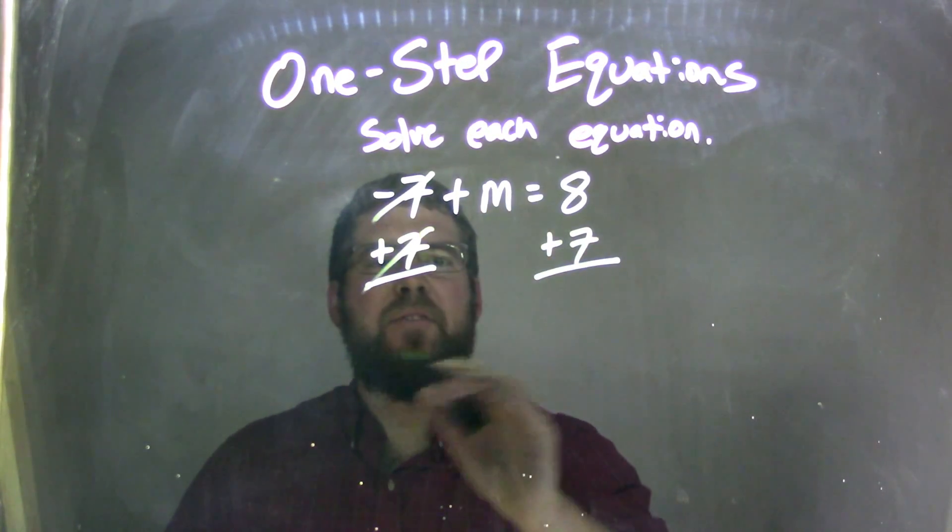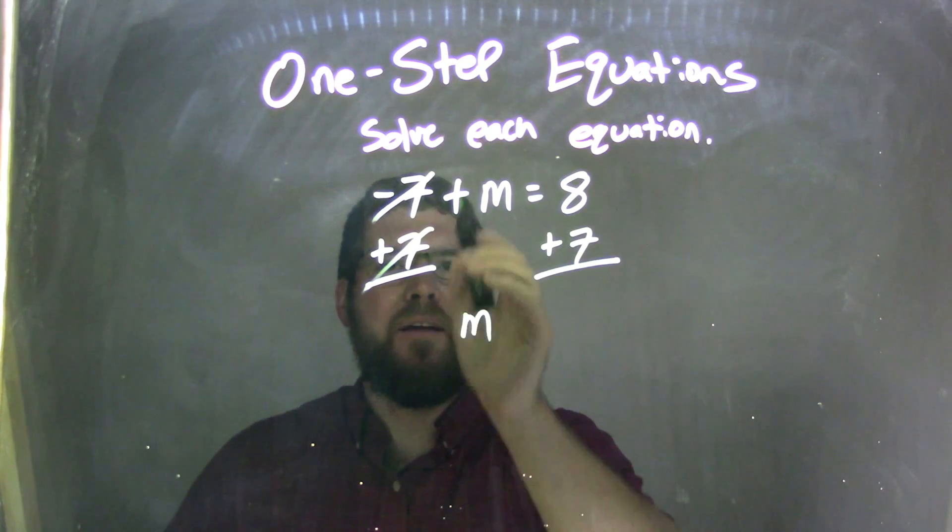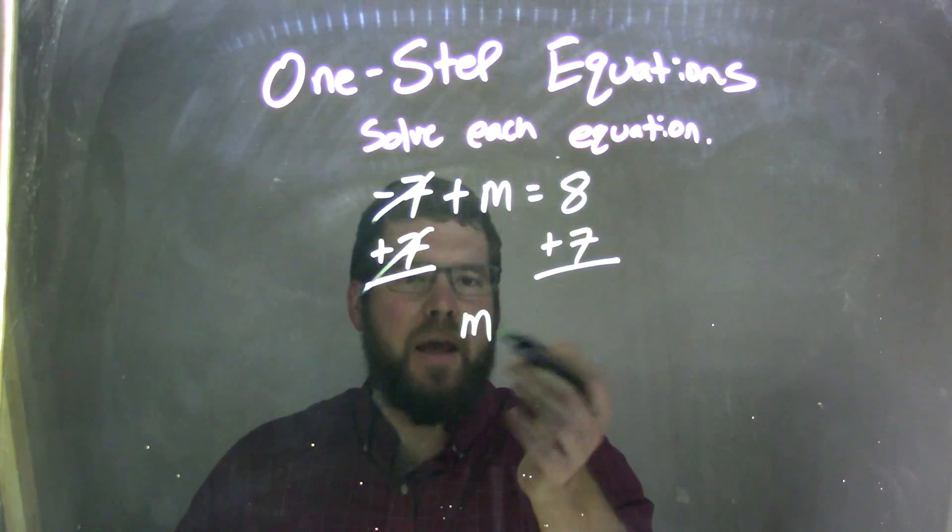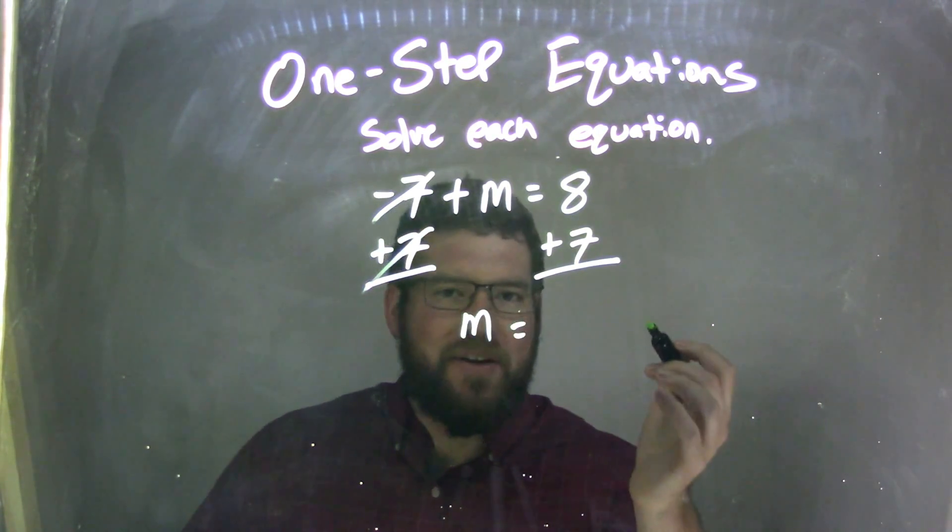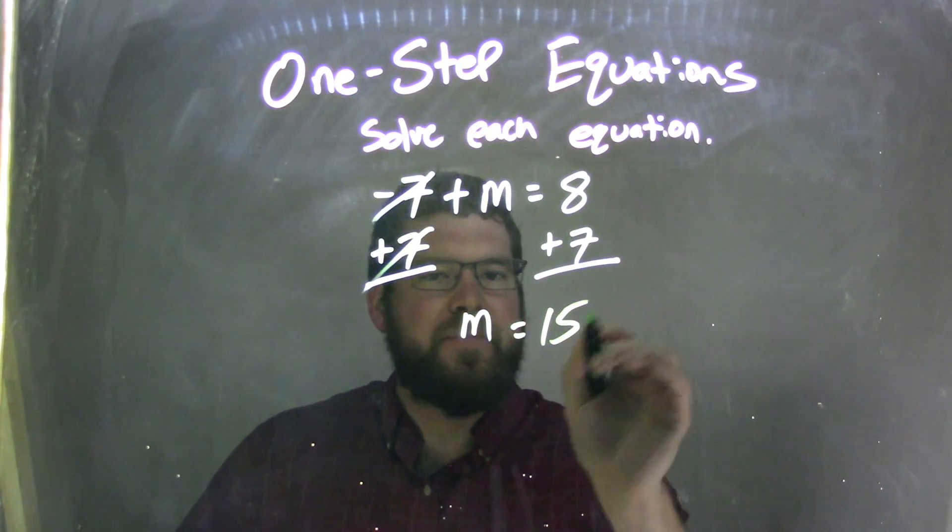Well, adding a 7 here cancels that out. Now I'm left with just an m. Negative 7 plus 7 is 0, so I just have an m there. And what's 8 plus 7? 8 plus 7 is 15, and now I'm done.